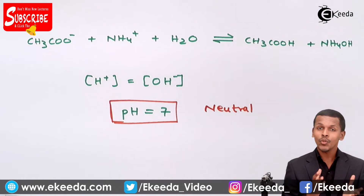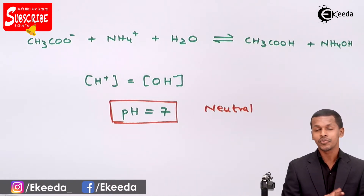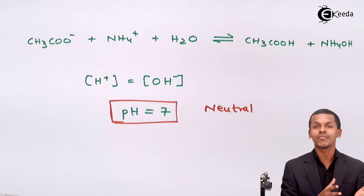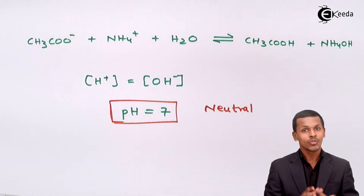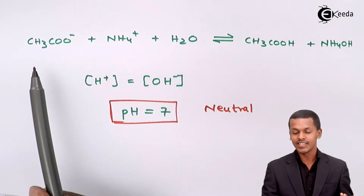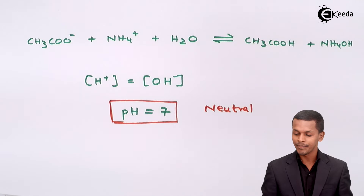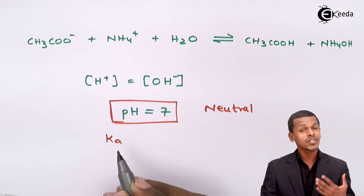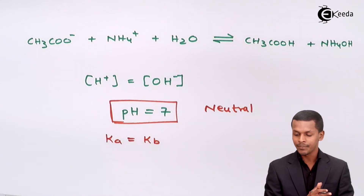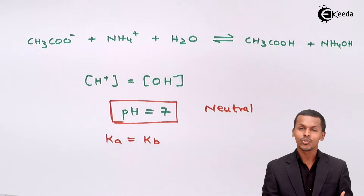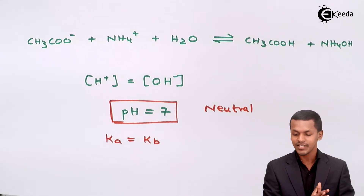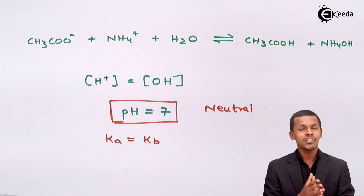Usually, even though we are adding a weak acid and weak base, it is not necessary that we will get a neutral solution — it will depend on Ka and Kb, the dissociation constants of the weak acid and weak base. In this neutral solution example with acetic acid and NH₄OH, the dissociation constants of the weak acid and weak base are the same. That is why H⁺ and OH⁻ utilization is balanced, maintaining their concentrations unchanged, and the solution becomes neutral.